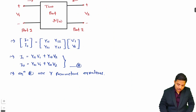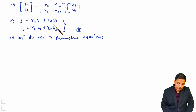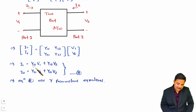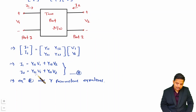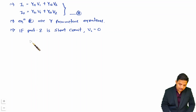Now I will explain how we can measure Y parameters Y11, Y12, Y21, and Y22. If you observe the equations carefully, when you set V2 = 0 — meaning port 2 is short circuited — then Y11 = I1/V1 and Y21 = I2/V1.